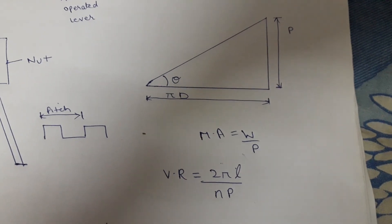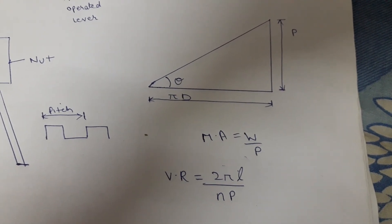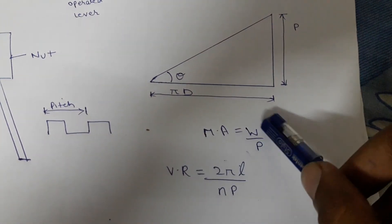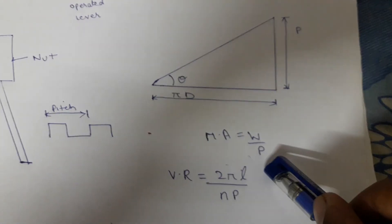So the mechanical advantage we all know that the mechanical advantage may be defined as the ratio of load lifted to the effort applied. So as usual the simple screw jack has the same formula that is load lifted upon effort applied.